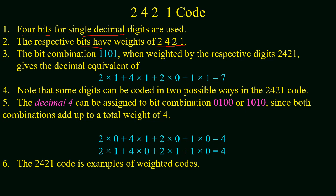Now for the bit combination of 1101, its respective weight will be evaluated as 2×1 + 4×1 + 2×0 + 1×1, and adding will give a value of 7. So 1101 is a 2421 code of 7.